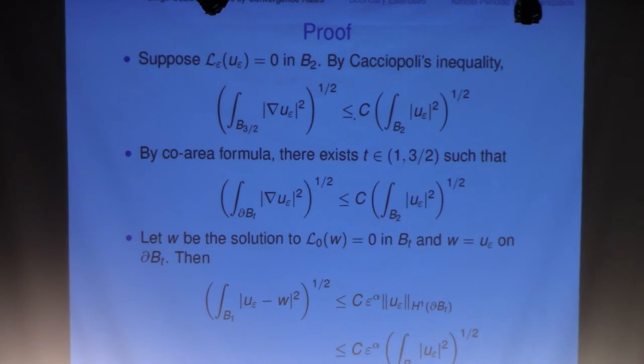And next, I claim that there is always t between one and three-halves, so that this surface integral, this is a volume integral in a Caccioppoli, but now I want to get something on the surface integral. On the boundary of a ball of radius t, it's controlled by the right-hand side, possibly with a different constant.